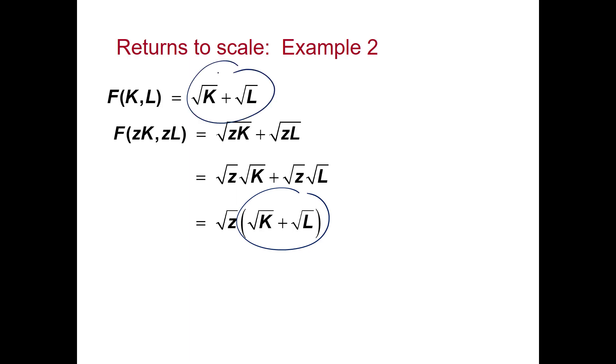We can substitute in there. So here we can see if we increase the inputs to this production function by a factor of Z, output increases by something less than Z, the square root of Z.